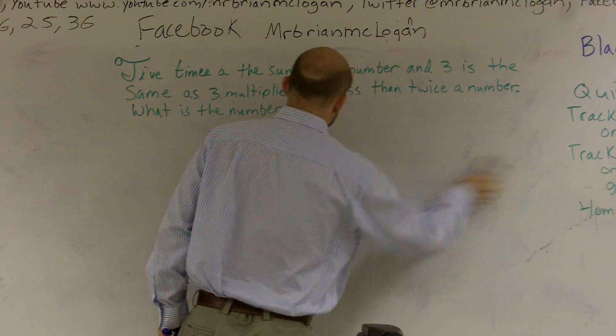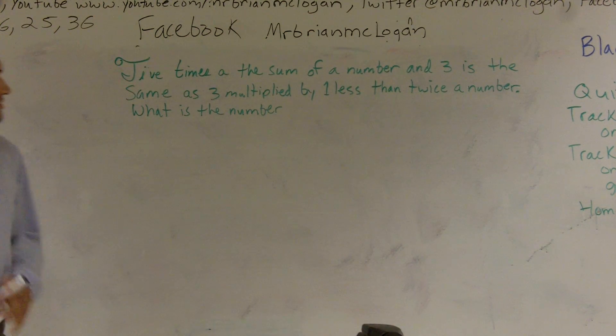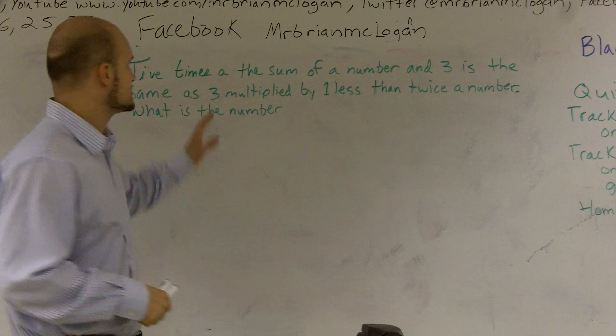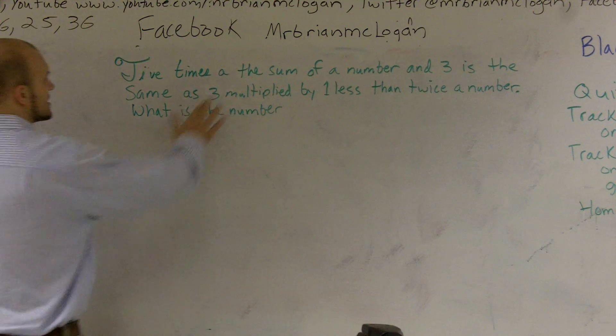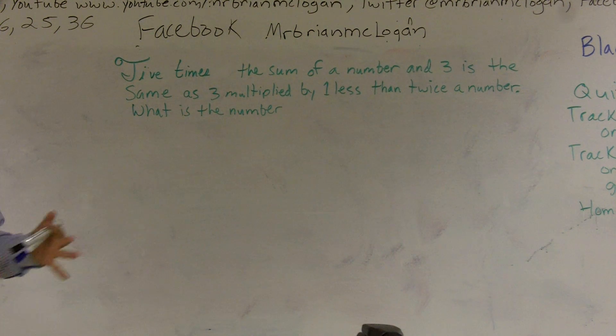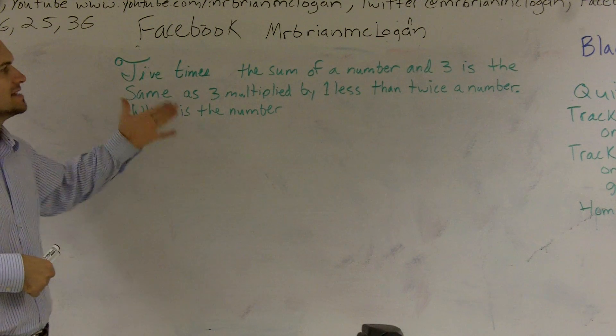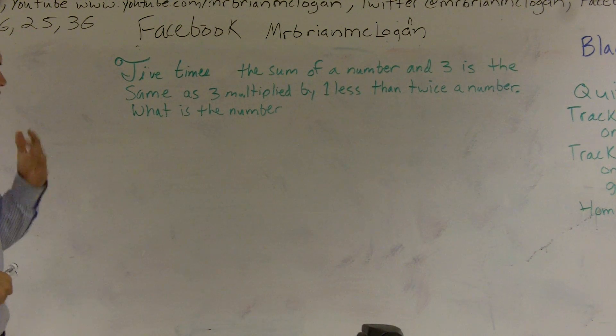Alright. What I'd like to do is show you guys how to solve this word problem. So up here it reads: five times the sum of a number and three is the same as three multiplied by one less than twice a number.